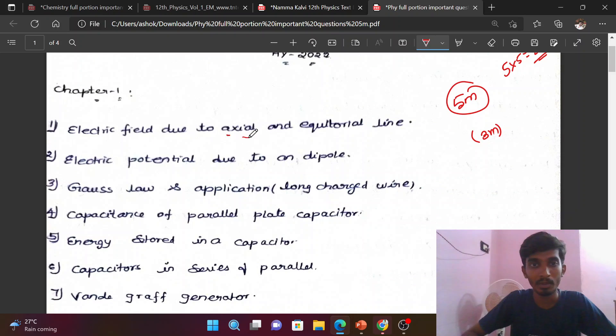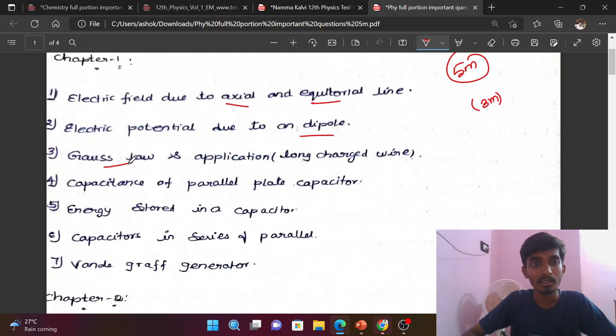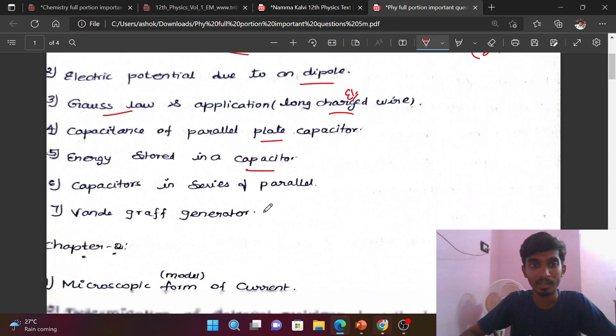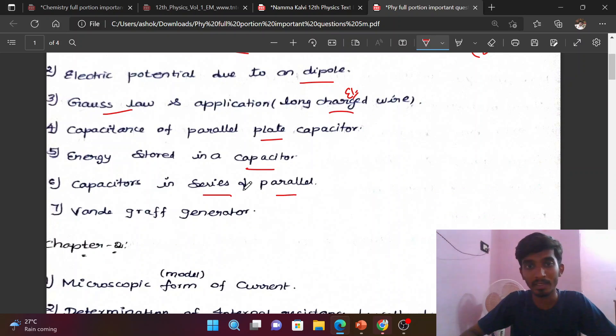Electric field due to ring and equatorial line, electric potential due to dipole, Gauss law applications for long charged wire, capacitance of parallel plate capacitor, and energy stored in capacitors in series and parallel. Three marks each, but important for 5-mark questions.